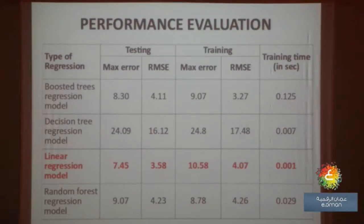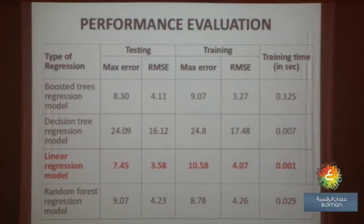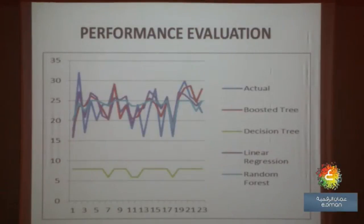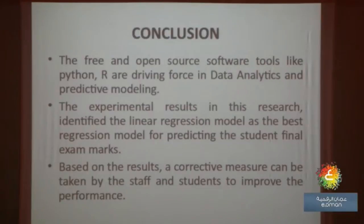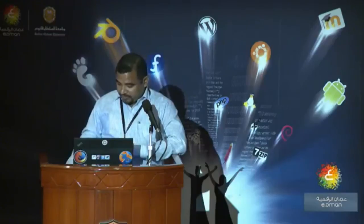We grouped performance into three categories: performance during testing, performance during training, and training time. We found the maximum error — for example, if the actual score is 100 and the model predicts 94, the maximum error is 6 — as well as the mean error, which we call RMSE, root mean square error. Based on this observation, linear regression model is the best one, represented as a graph. In conclusion, Python is one of the top tools in data analytics and it's free open source. Experimental results clearly show that linear regression is the best model for predicting student final exam marks, and once marks are known early, you can motivate students to perform in a good way.